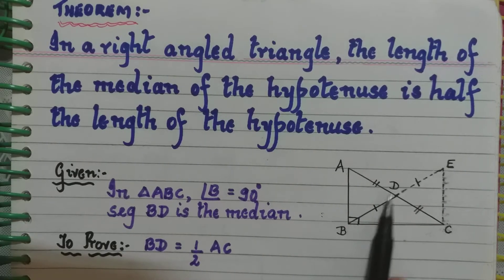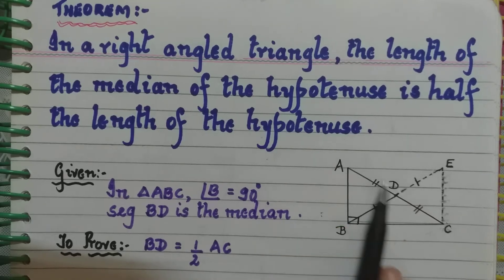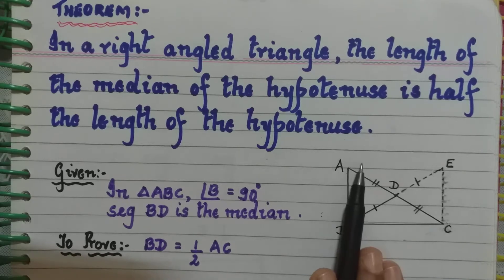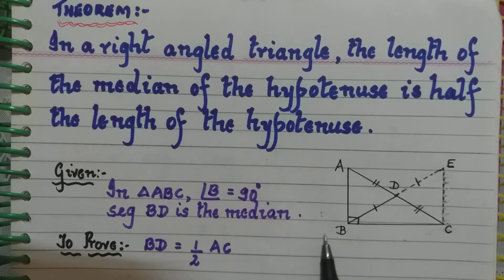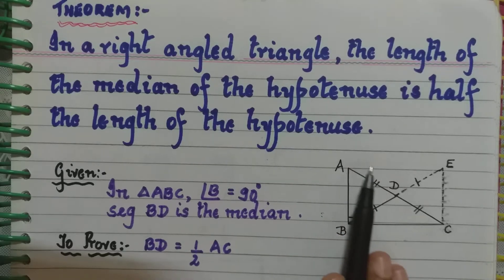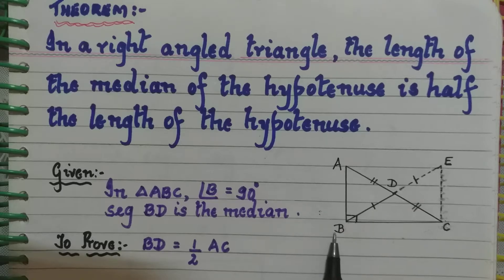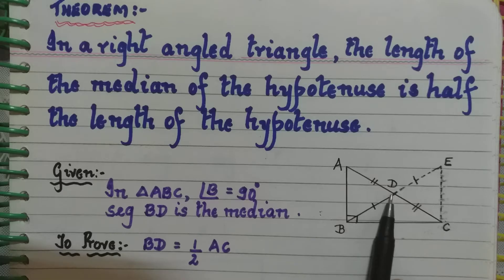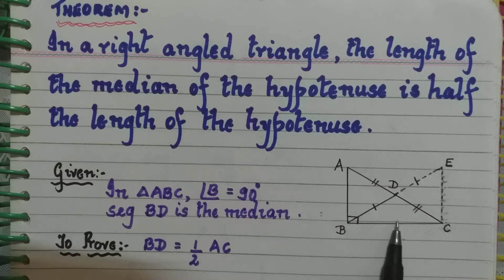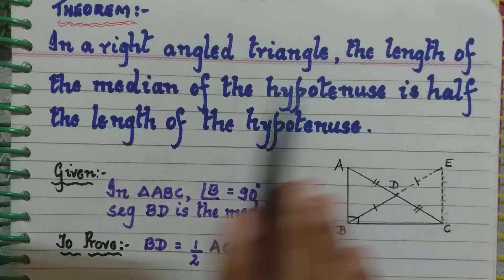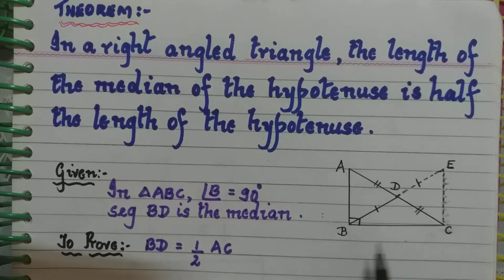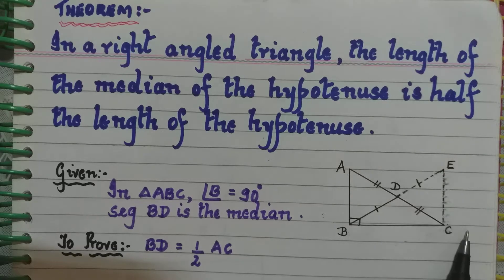We have to show that this median cuts the hypotenuse into two equal parts. Therefore, the length of BD equals half of AC, and AD equals DC. What we actually have to prove is that BD is half of AC.